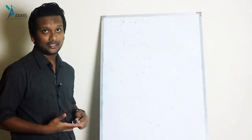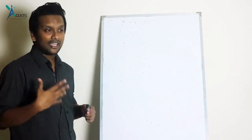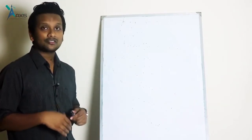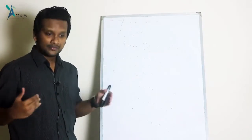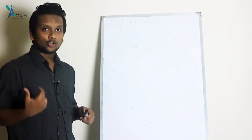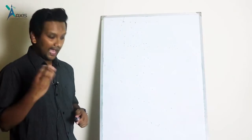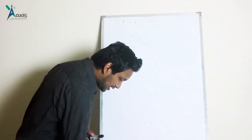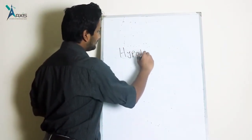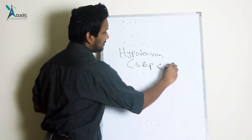Severe sepsis is sepsis with evidence of organ hypoperfusion. When sepsis occurs, systemic vasodilation occurs, which ultimately leads to organ hypoperfusion. The documented evidence of organ hypoperfusion includes: first, hypotension — systolic blood pressure less than 90 millimetres of mercury — and second, serum lactate more than 3 millimoles per liter.